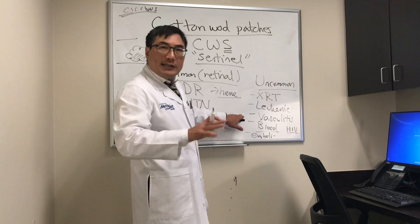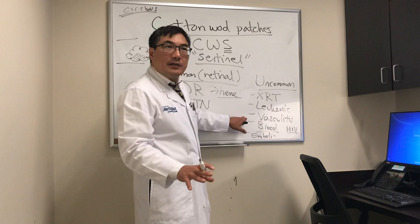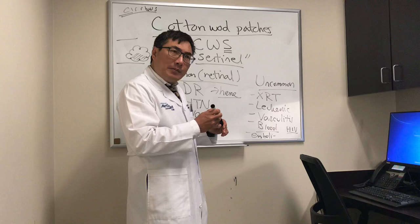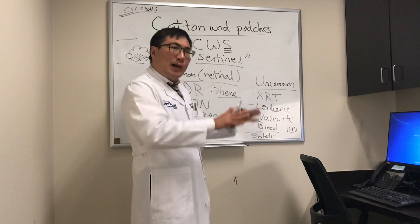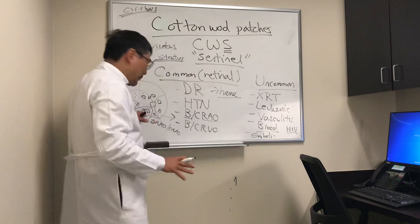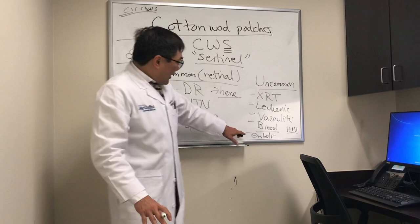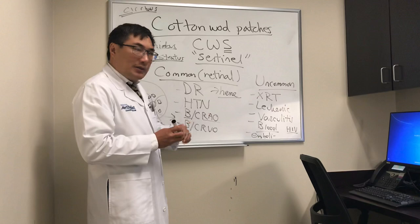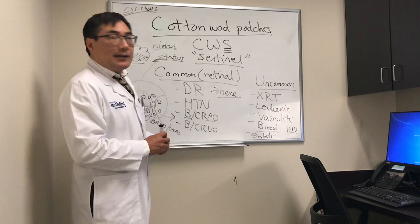Vasculitis will have leakage on fluorescein angiogram, and that includes giant cell arteritis. An elderly patient with multifocal cotton wool patches should make us think about giant cell arteritis — the vasculitis of the elderly. If it's a hypercoagulable problem, we'll see little cotton wool patches from cryoglobulins or blood viscosity issues — multifocal, but not in the typical distribution for vein or arterial occlusion; rather, in between the artery and vein.